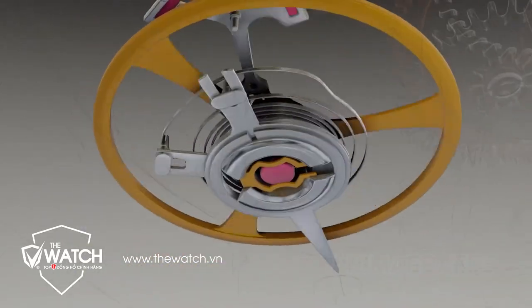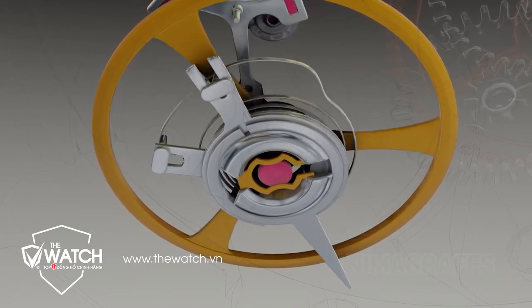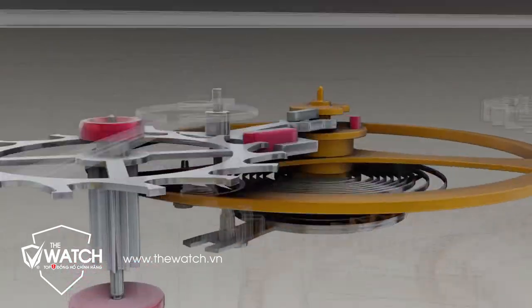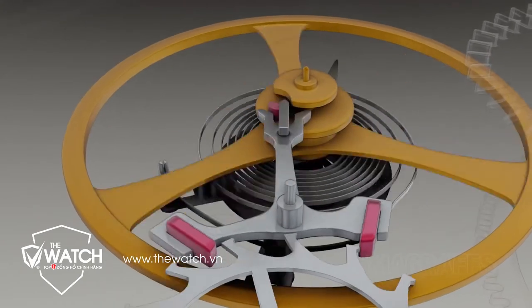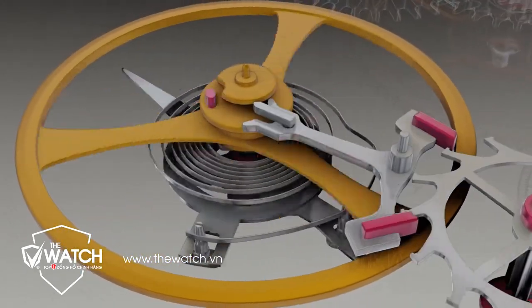The hairspring has regulator pins to adjust the active length of the spring. This alters the balance wheel swing rate and as such the speed of the entire watch. This is what is meant by regulating a watch that keeps time too fast or too slow.